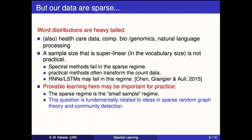In many scientific disciplines we're really in this small sample regime because the vocabulary size is very large — as we get data, we just see more and more new words. The question is: how do we learn in this regime when our data are very sparse? These questions relate to ideas in sparse random graph theory, where you have a graph, believe there are some communities in it, and want to discover them, but the graph is very sparse.